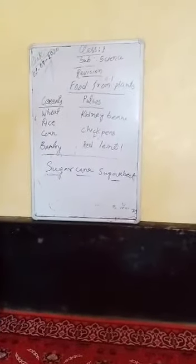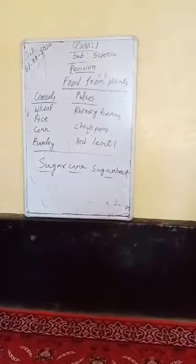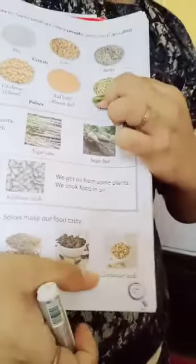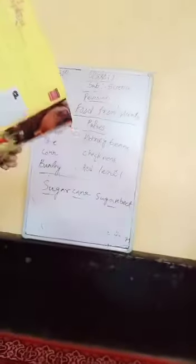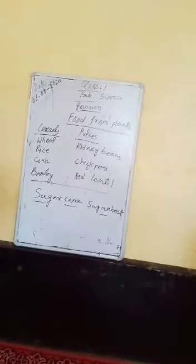Next, we get spices from some plants. Spices make our food tasty. Some examples of spices are cardamom, turmeric, cumin seeds, cloves, and coriander seeds. We also get tea from tea leaves and coffee from coffee plants. Thank you so much for today.